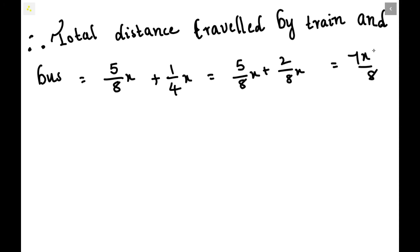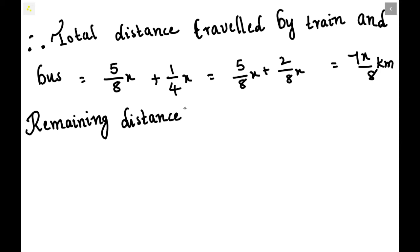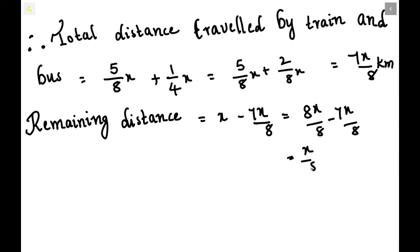This is the distance traveled by bus and train combined. There will be some remaining distance, which is the distance traveled by boat. The remaining distance is x minus 7x/8. Taking LCM gives 8x/8 minus 7x/8, which equals x/8. So the distance traveled by boat is x/8.